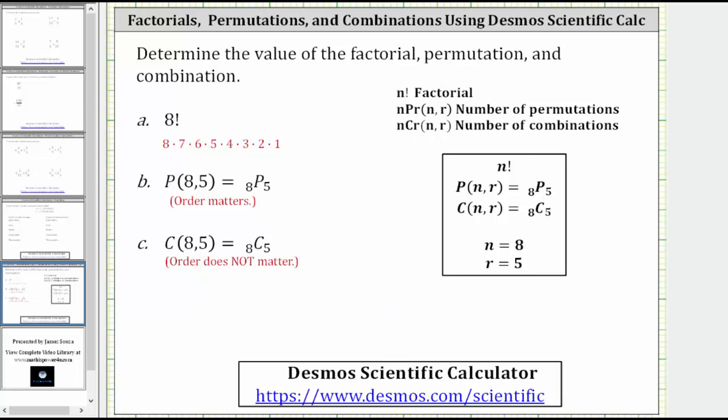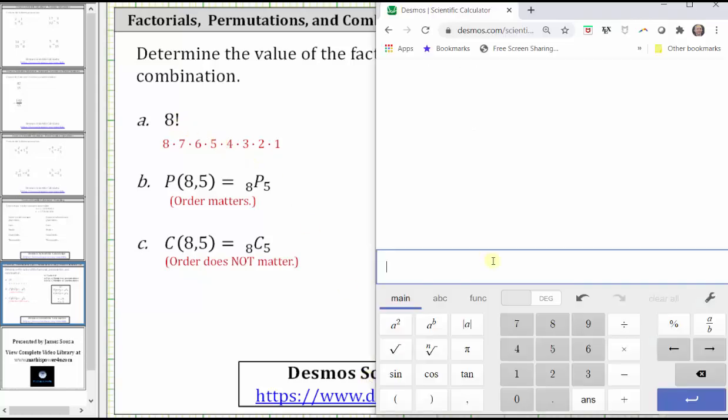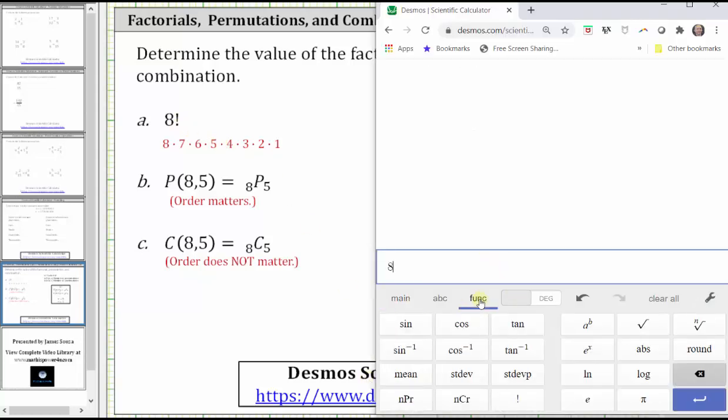Going to the calculator, to evaluate eight factorial, we enter eight, click the functions menu, and then click the factorial toward the bottom. Notice automatically the answer shows on the right of 40,320.